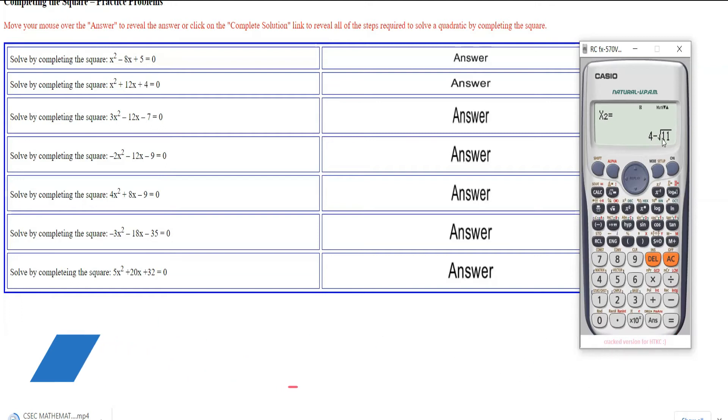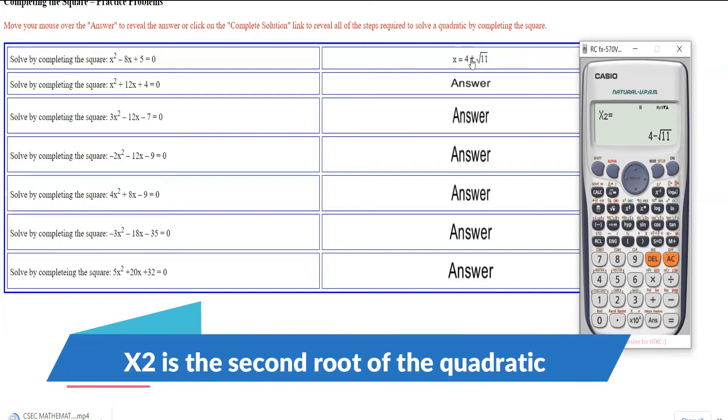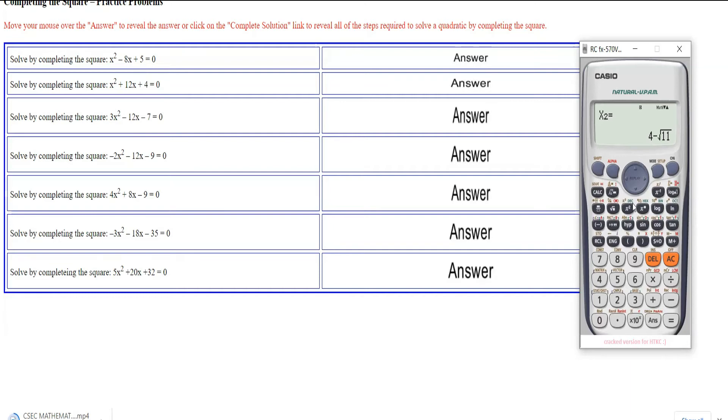But this is not what we want. We don't want this; we want the completed square. We need the minimum value to complete the square, and we need the x-value at the turning point.